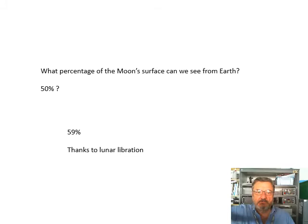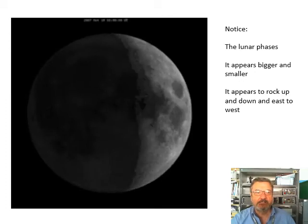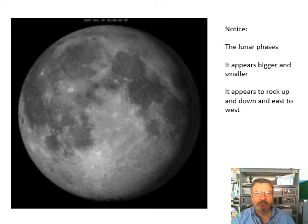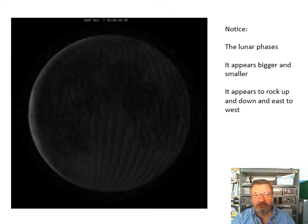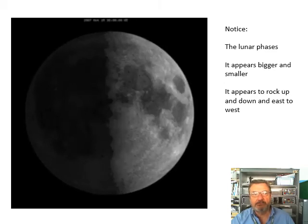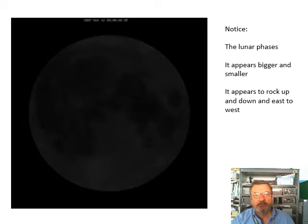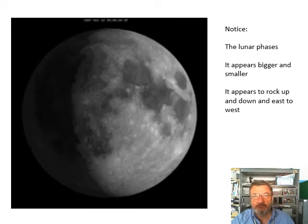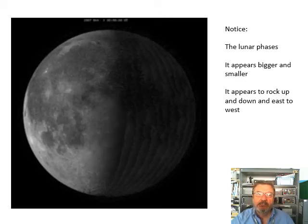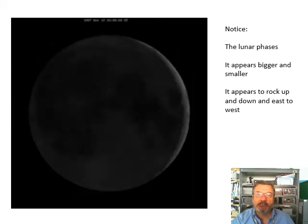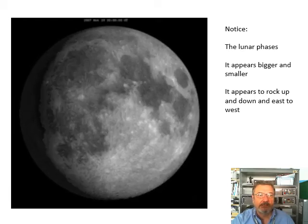The star sign Libra is the scales, so remember rocking. It's a rocking motion. Libration is a rocking motion. Look at this animation - it's pretty crazy. This is looking at the Moon over a period of time. There's a few things to notice.